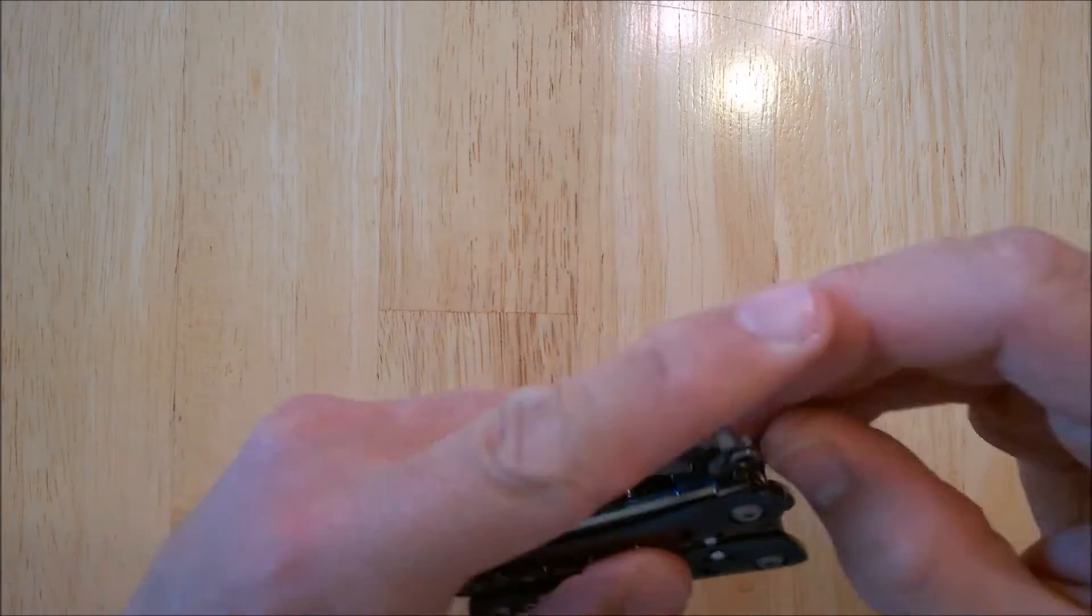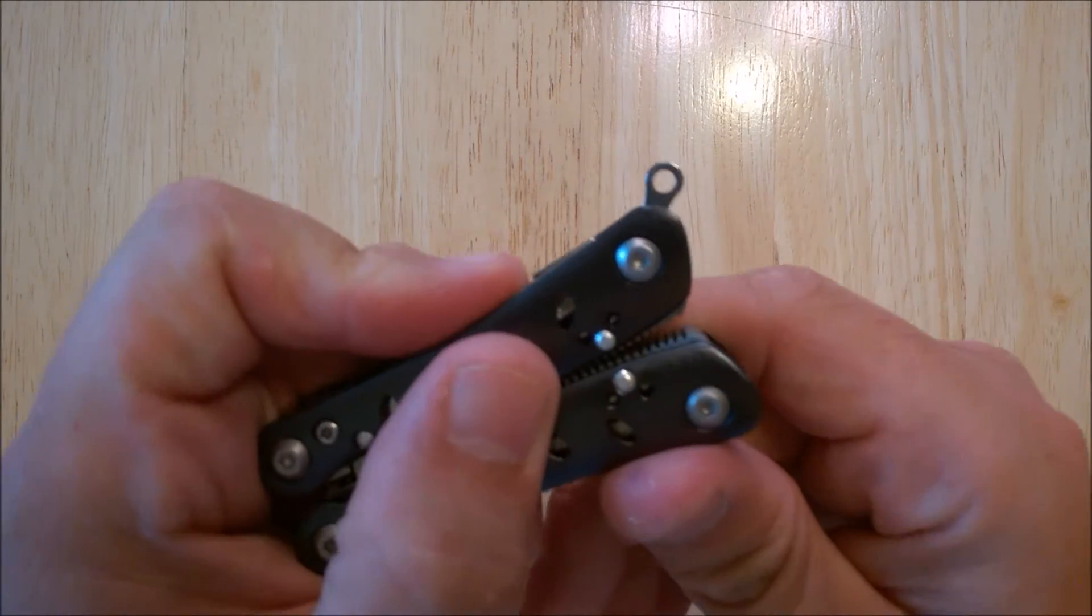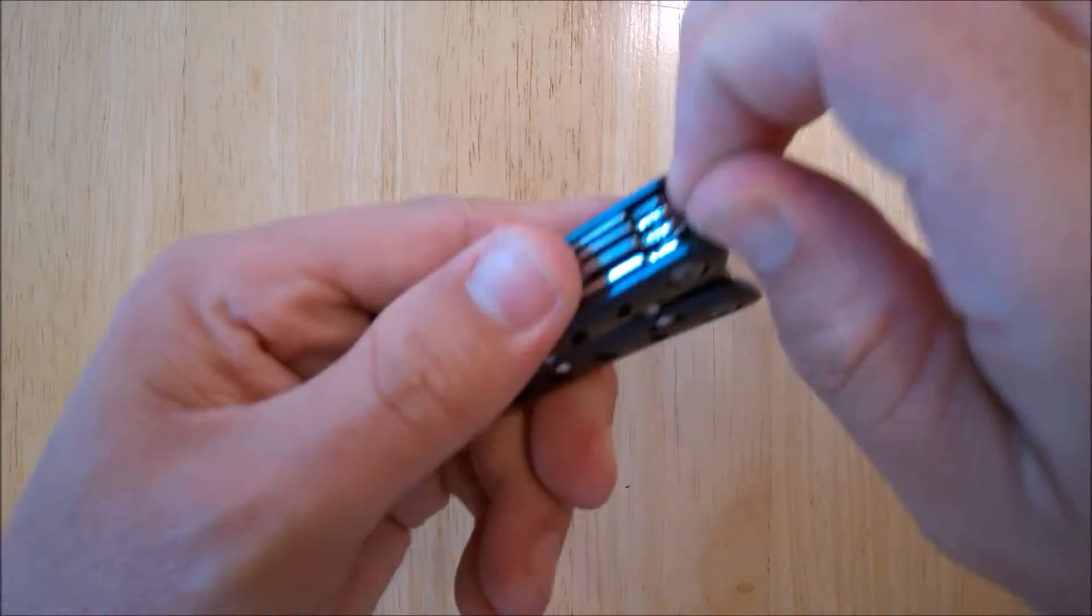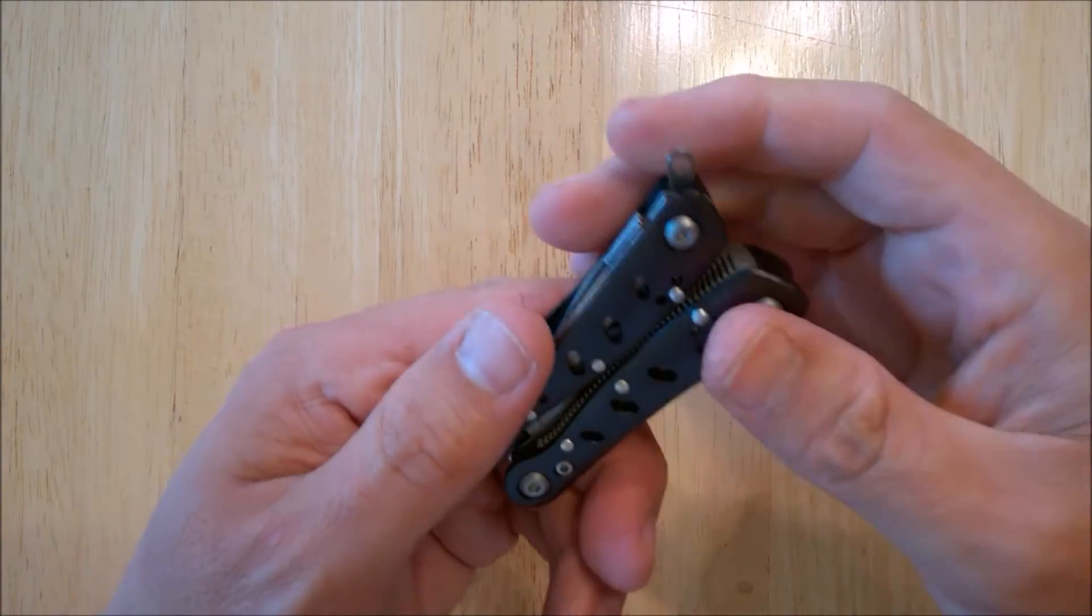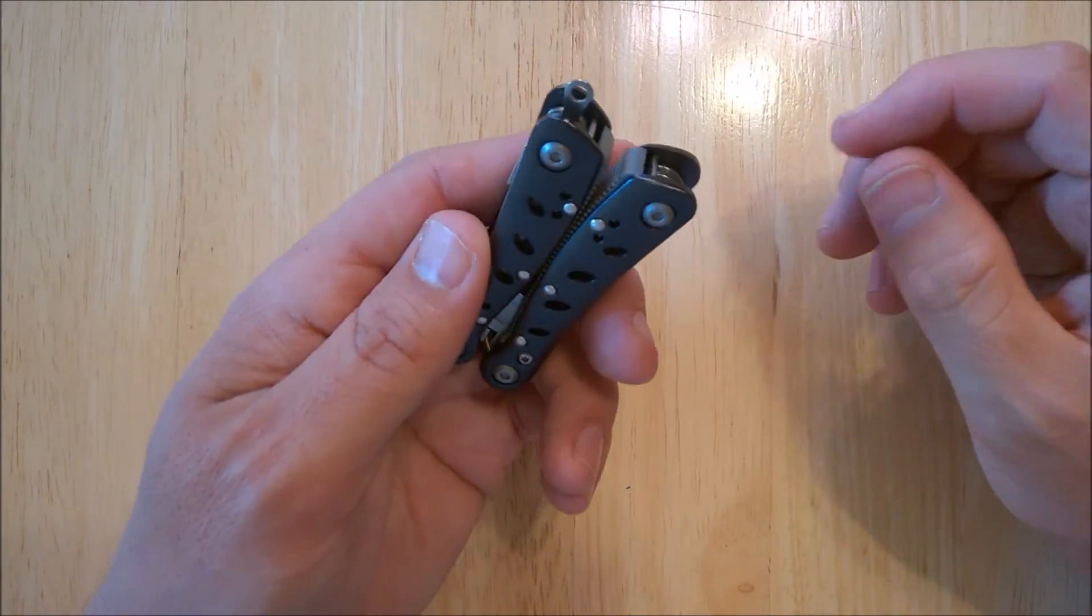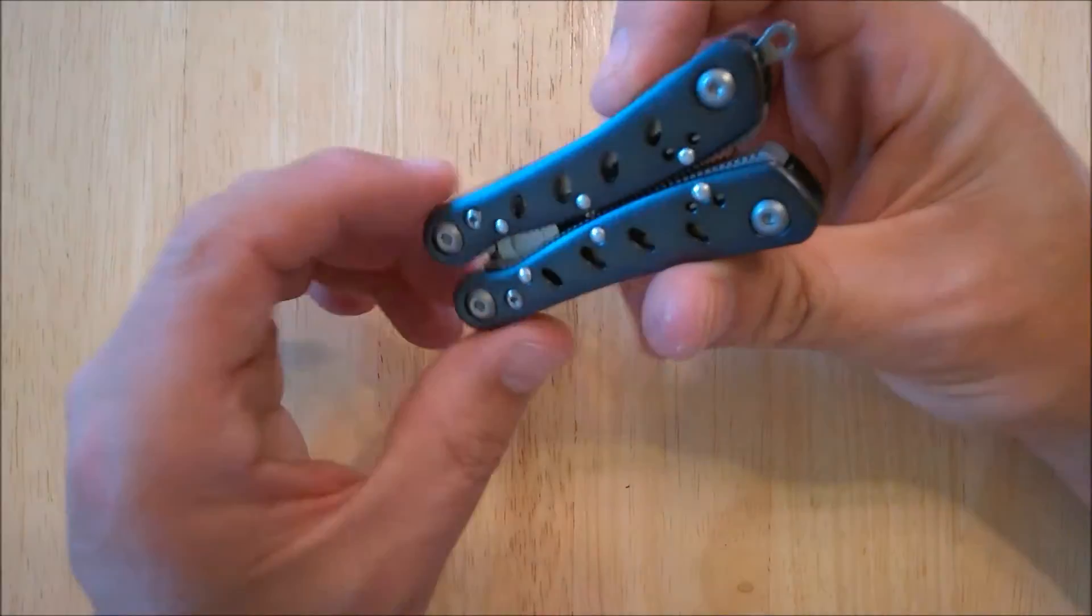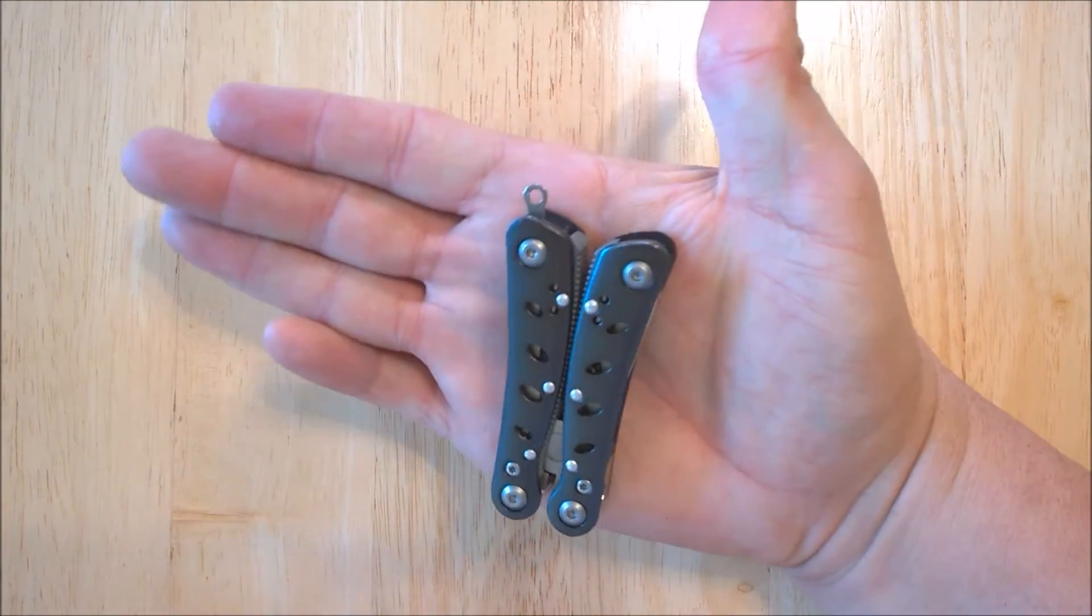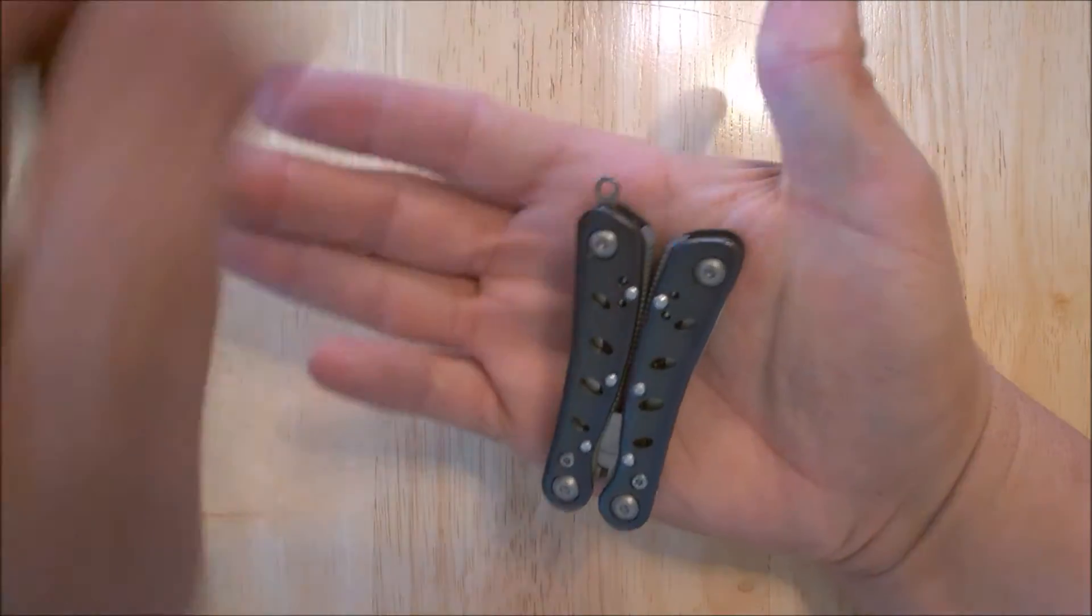You also have on here a little lanyard hole or you can clip it to your set of keys if you don't mind a little bit of a larger dangler from your keys. This isn't that very large really to dangle from your keys. It easily fits in the palm of your hand.